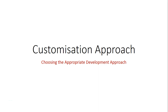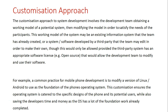The next system development approach we're going to look at is the customization approach. In this approach, the development team obtains a working model for the potential system, which is then modified to satisfy the requirements of the organization they're developing the information system for. They may take the existing information system that organization already has and modify and update it to meet the technological needs or availability of new technology now on the market.